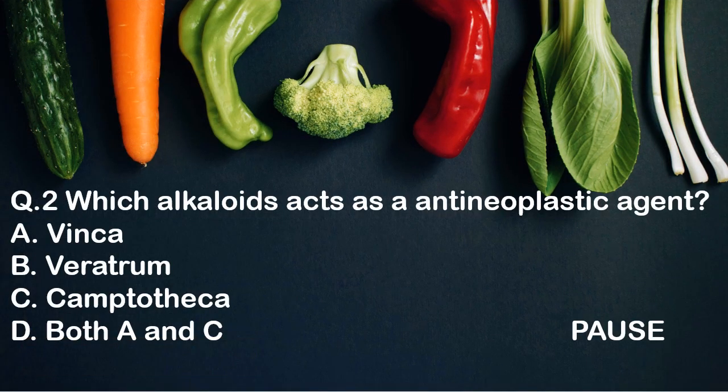Question 2: Which alkaloid acts as an anti-neoplastic agent? Option A, Vinca. Option B, Veratrum. Option C, Camptotheca. And option D, both A and C. And the right answer is option D, both A and C. That means Vinca and Camptotheca are the anti-neoplastic agents.